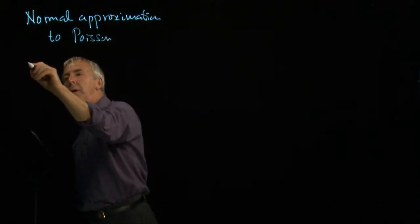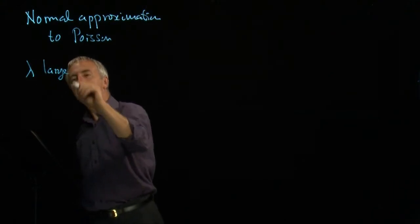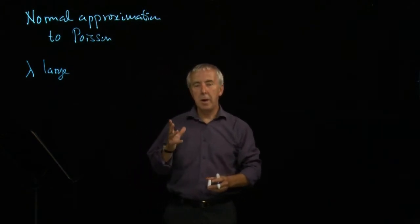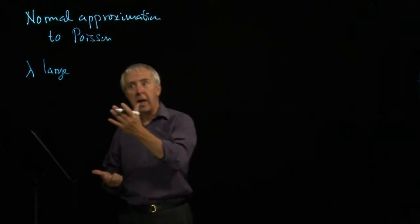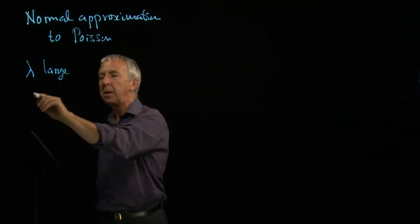And this is when the mean lambda itself is large. And then we can replace this by a normal distribution with mean lambda, clearly because this is the mean of the Poisson. They have the same mean.